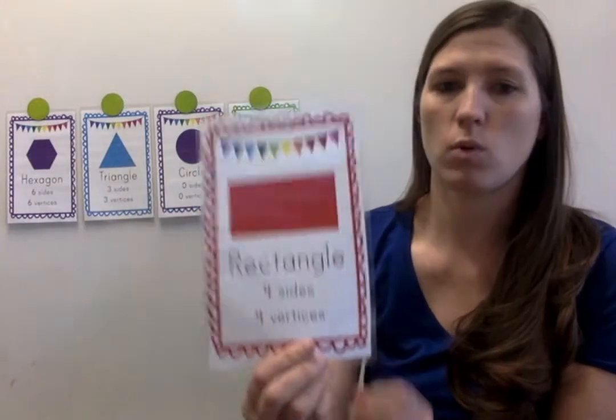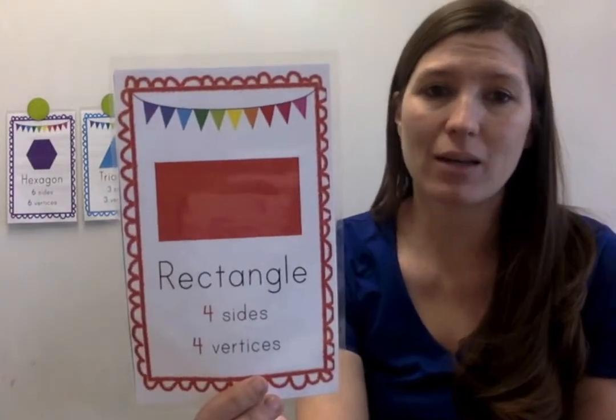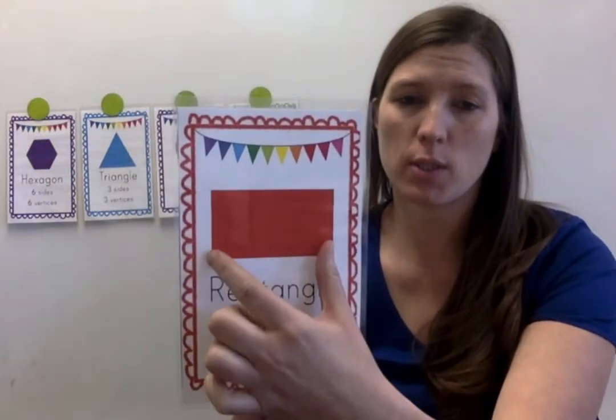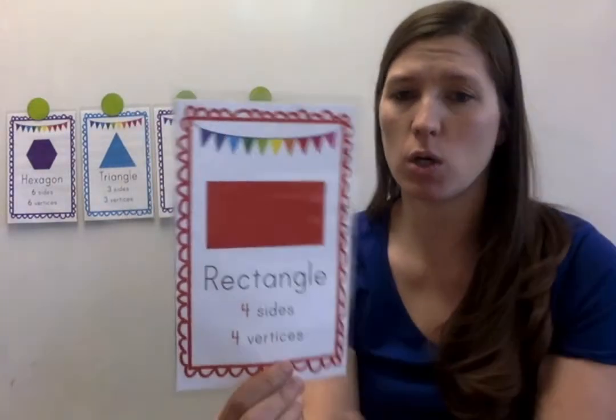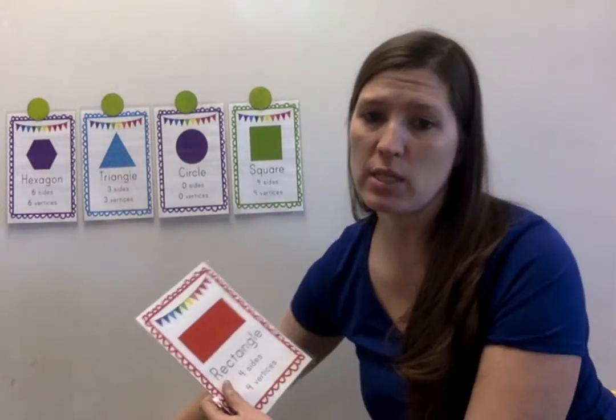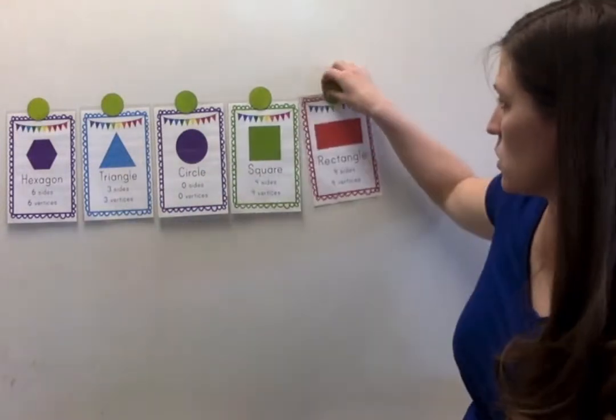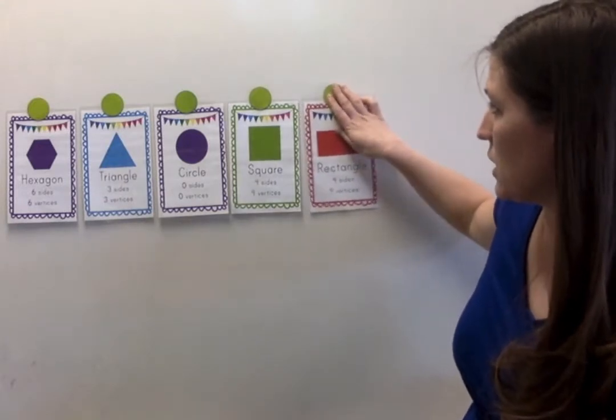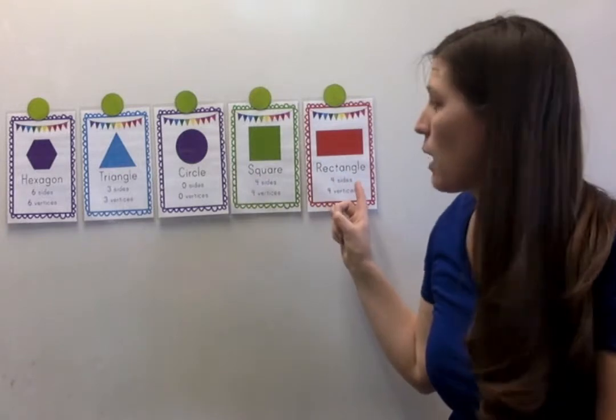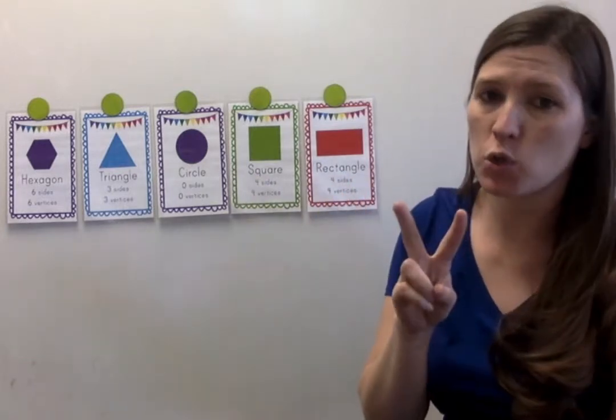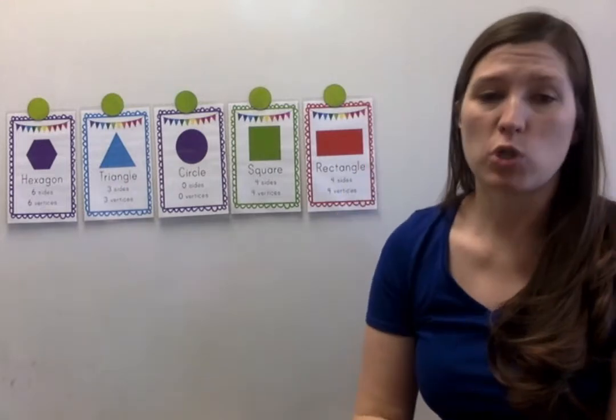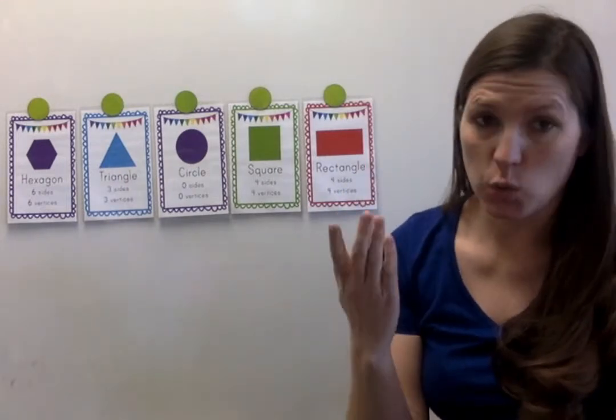All right, next one. Rectangle. A rectangle is special because it has 2 short sides, 2 long sides. It also has 4 vertices and 4 sides like a square, but the difference is that a square has 4 equal sides and a rectangle has 2 sides that are short and 2 sides that are long. So I'm going to describe some shapes, and you will guess which one they are.